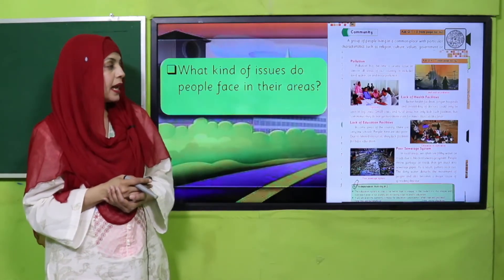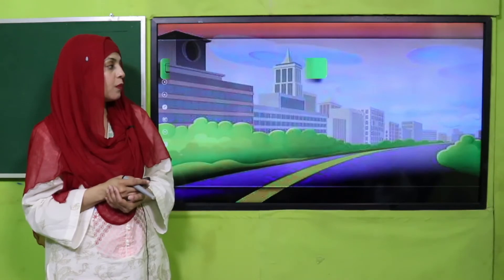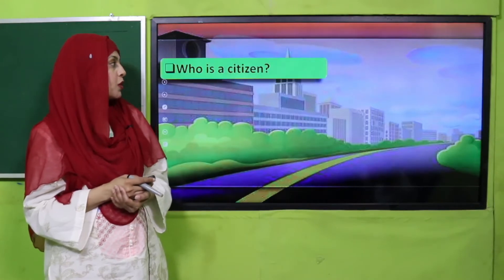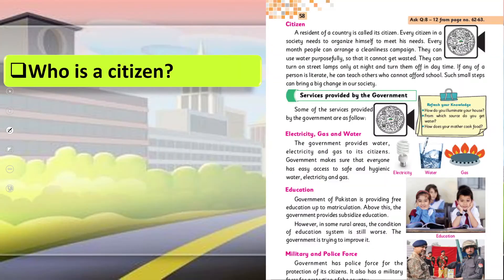Next, we moved forward towards citizenship. Who is a citizen? A person living in a country, or a resident of a country, is known as a citizen. As a citizen, we have some rights and responsibilities, which we discussed in the next lecture.